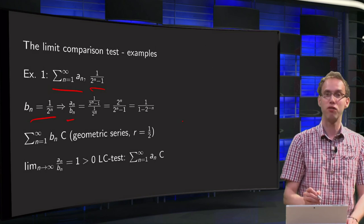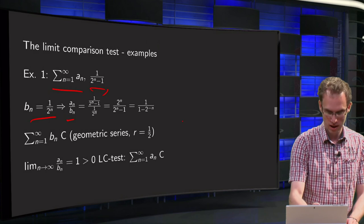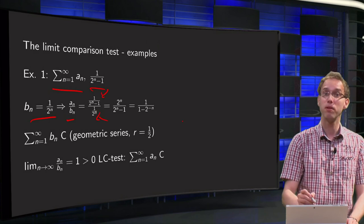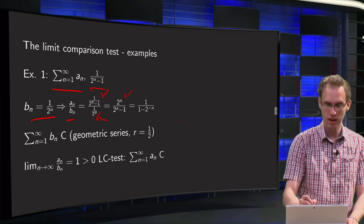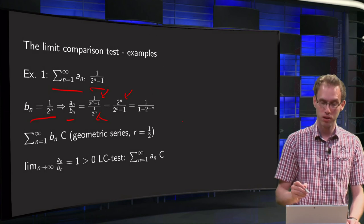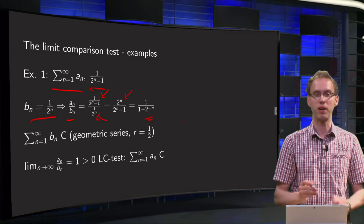Then we compute an over bn. The an and the bn simplify a bit, put the bn over here, divide by the highest number, by the 2 to the power n, and we have a 2 to the power minus n over here.